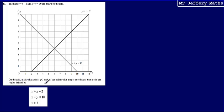Then we're told that on the grid, mark with a cross each of the points with integer coordinates that are in the regions defined by y is greater than x minus 2, x plus y is less than 10, and x is greater than 3.